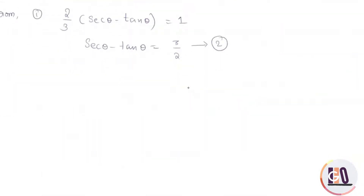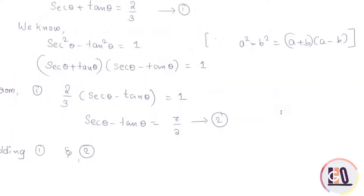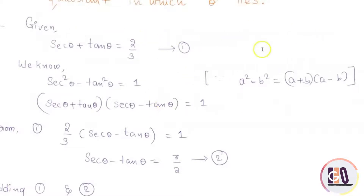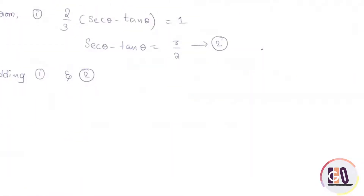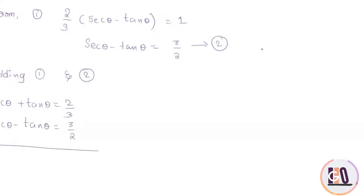Adding equation 1 and equation 2: sec θ plus tan θ equals 2 by 3, and sec θ minus tan θ equals 3 by 2. When I add them, I get 2 sec θ equals 2 by 3 plus 3 by 2.